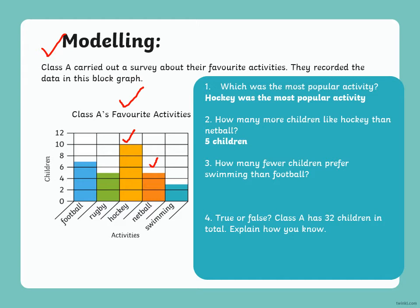How many fewer children prefer swimming than football? As we can see, three children like swimming and seven like football. So, seven minus three is four — four fewer children prefer swimming than football.